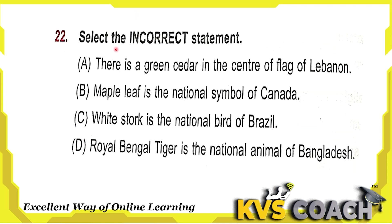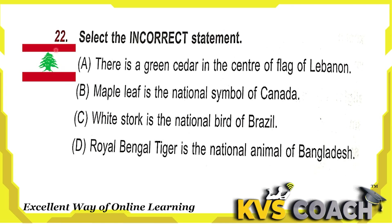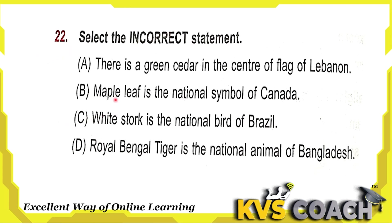Next question: select the incorrect statement. Option A: there is a green cedar in the center of the flag of Lebanon — this is a correct statement. Option B: Maple Leaf is the national symbol of Canada — this is also correct. Option C: White Stork is the national bird of Brazil — this is wrong; the national bird of Brazil is the Rufous-bellied Thrush. Option D: Royal Bengal Tiger is the national animal of Bangladesh — this is correct. So the incorrect statement is option C.